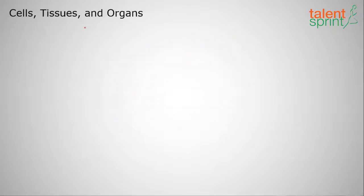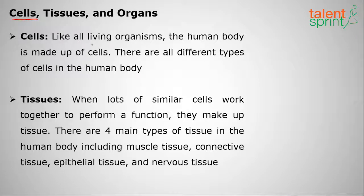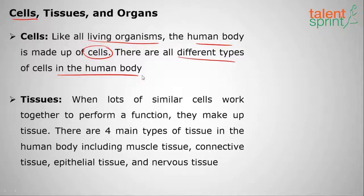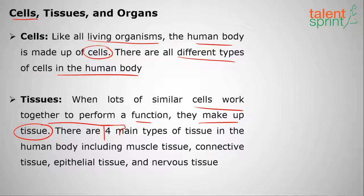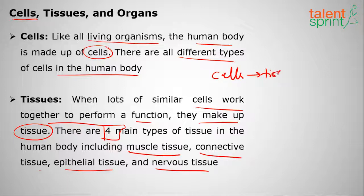What are cells, tissues, and organs? A cell is the basic unit of the human body. Like all living organisms, the human body is made up of cells. Groups of cells that work together to perform a function are called tissues. There are four major types of tissues: muscle tissue, connective tissue, epithelial tissue, and nervous tissue. Cells make up tissues, tissues make up organs, and organs make up organ systems.